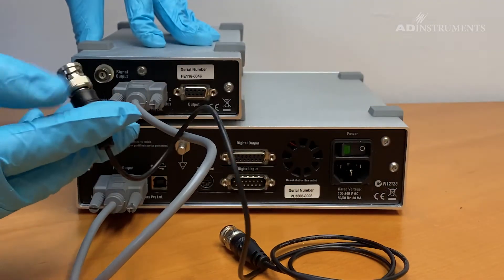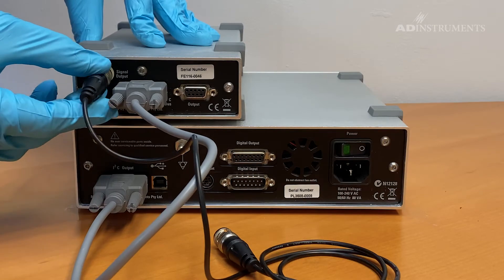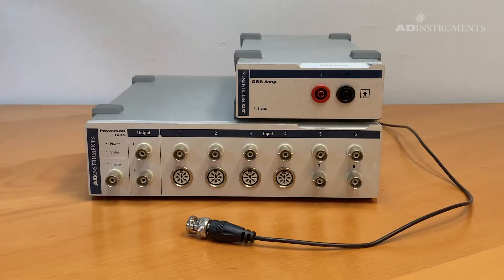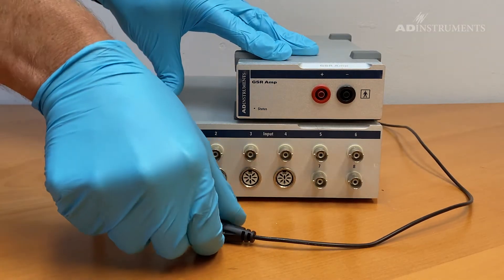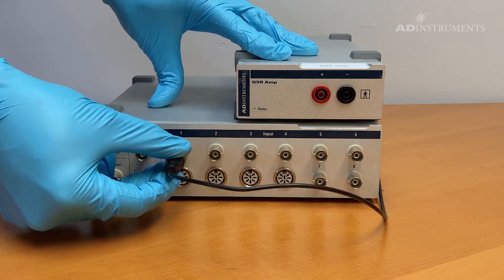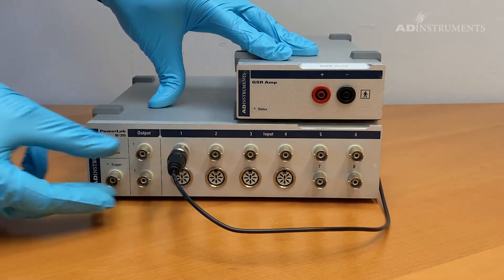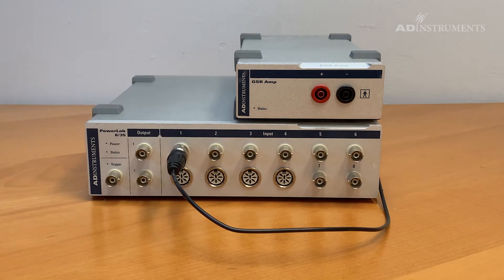Also connect the BNC cable to the signal output on the back of the GSR amp. Connect the other end of the BNC cable to one of the channels of the PowerLab, keeping in mind that LabChart will recognize the GSR amp on the channel that the BNC cable is connected to.